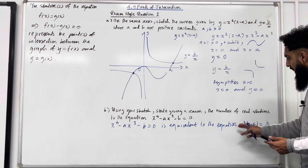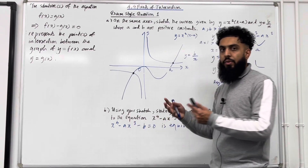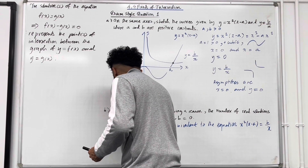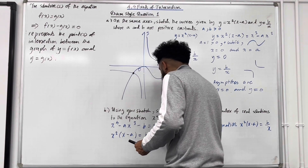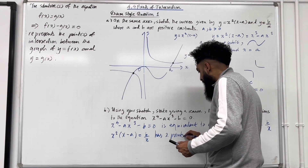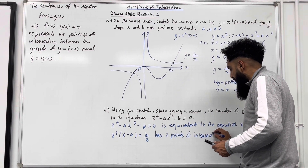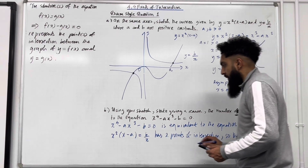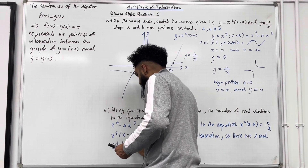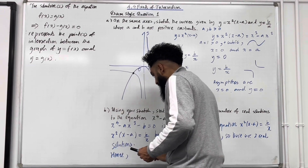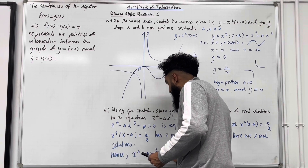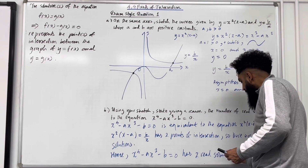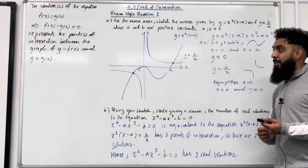Because there are two real solutions to the equation x²(x − a) = b/x — which has two points of intersection — there are two real solutions. Hence, the equation x⁴ − ax³ − b = 0 also has two real solutions. That completes exam-style question 1.